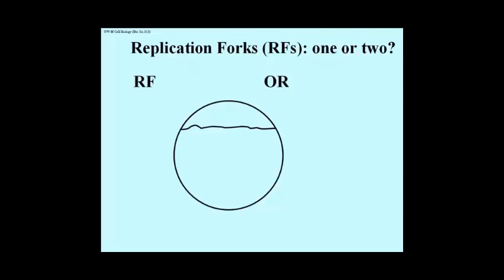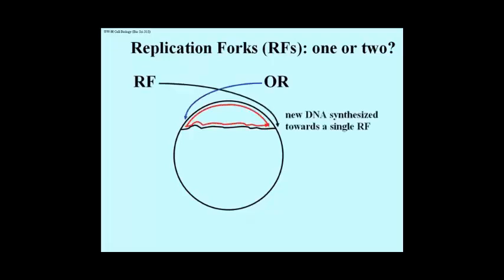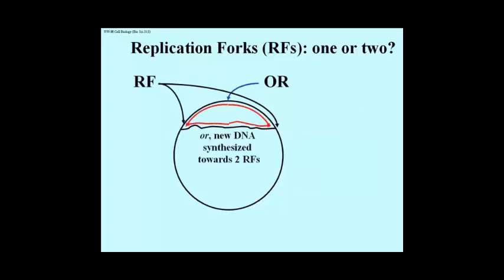Does replication proceed in one or in both directions from a point of unwinding from an origin? This slide illustrates the alternatives. In one alternative, DNA is replicated towards a single replication fork (RF), and in the other alternative, after pulling the two strands apart at the origin of replication, new DNA is synthesized towards two replication forks.